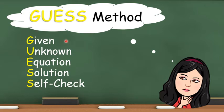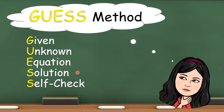First, we need to identify the given values in the problem. Next is to determine the unknown, or what is being asked in the problem. Third, write an equation that will help you get the answers. Fourth, carefully solve your formulated equations. And lastly, don't forget to self-check and review your answers.